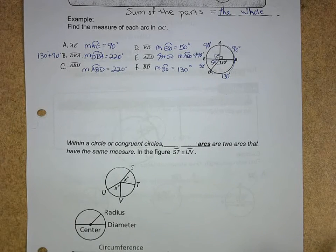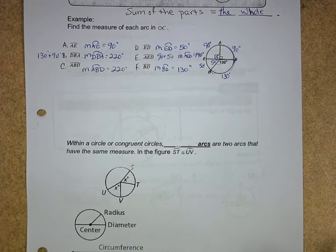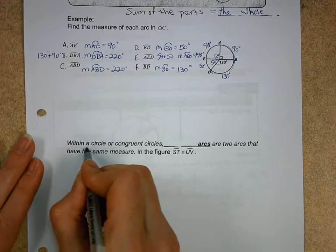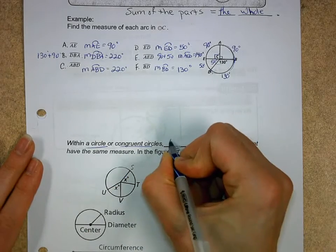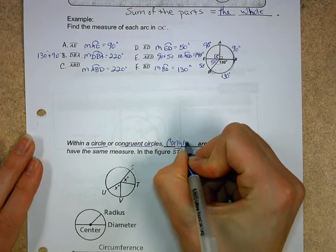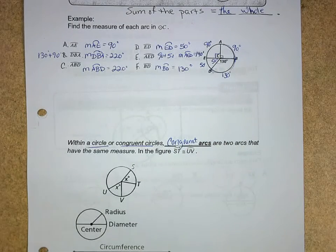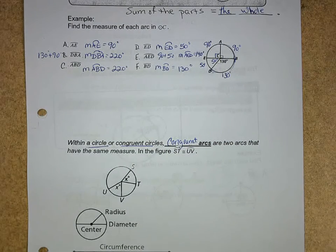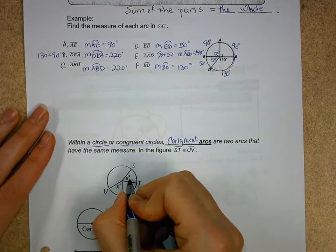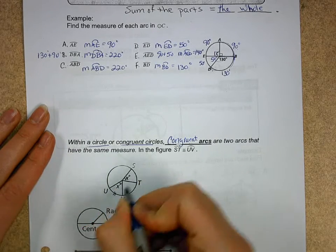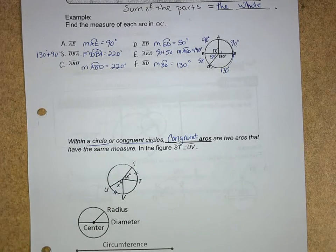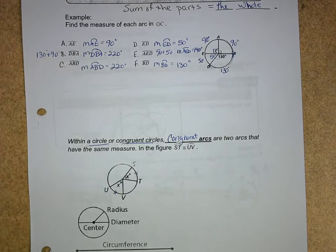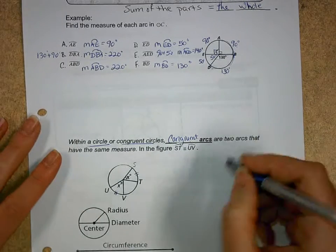we talk about congruent arcs. Now here's the rule for this one. It says within a circle or congruent circles, congruent arcs are two arcs that have the same measure. So like here, since these two angles are the same, I know these two arcs, and notice I marked them just like I would do line segments almost, would be the same measure. But here's the reason why.